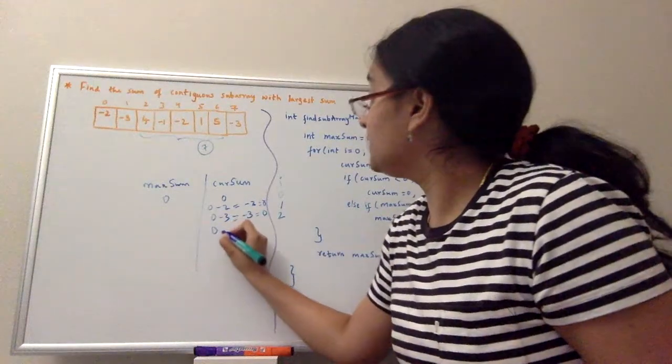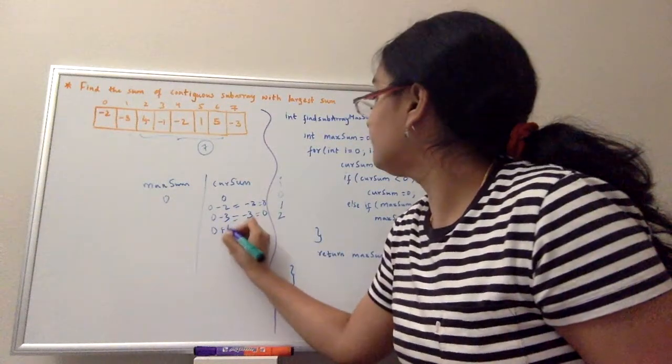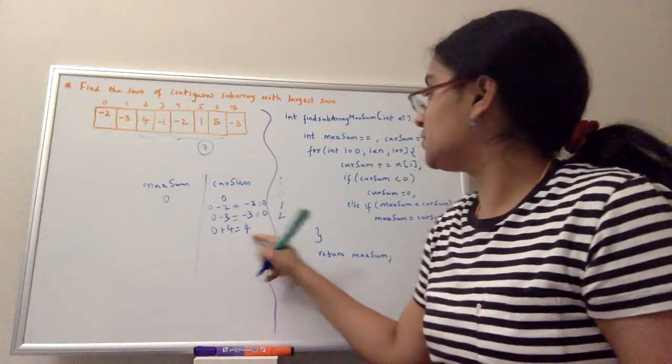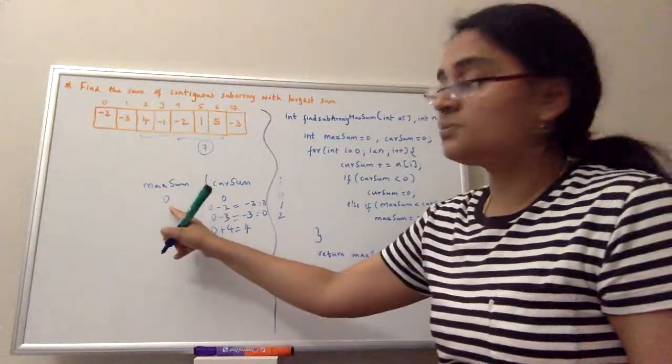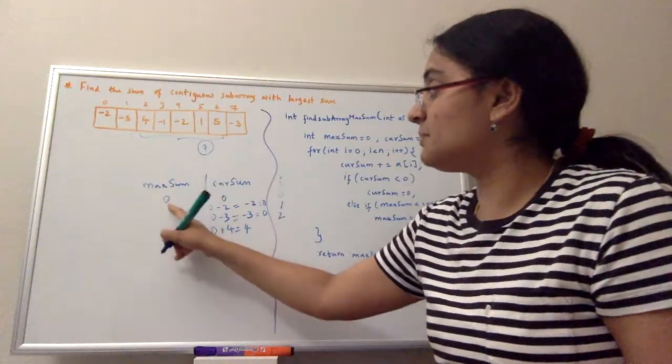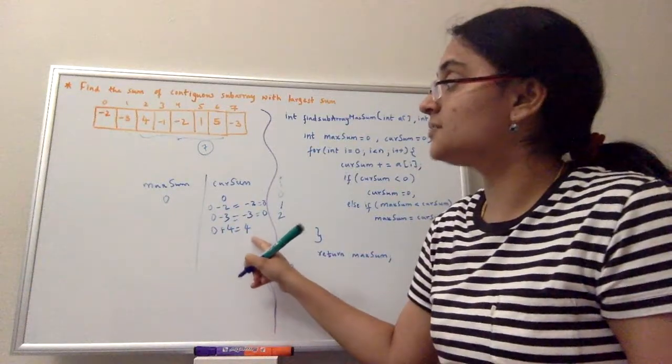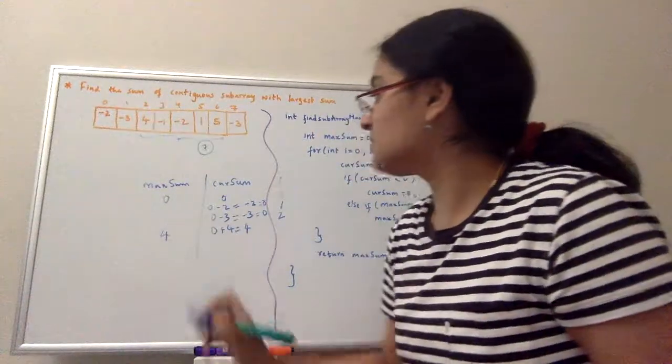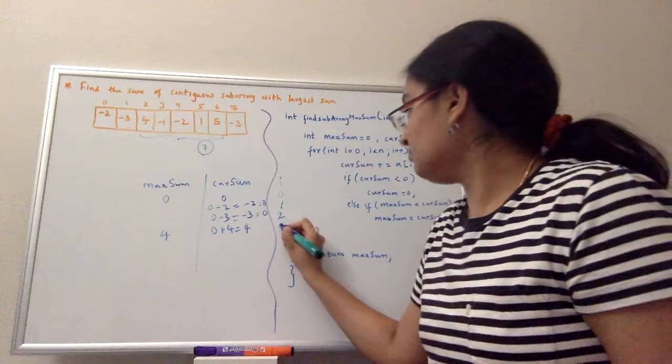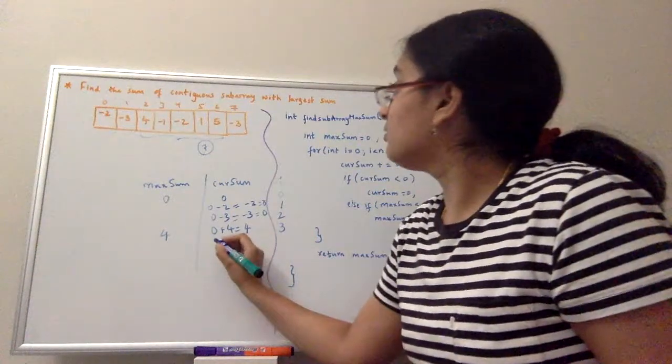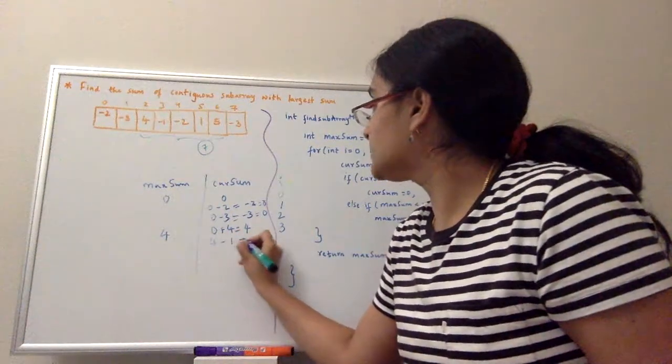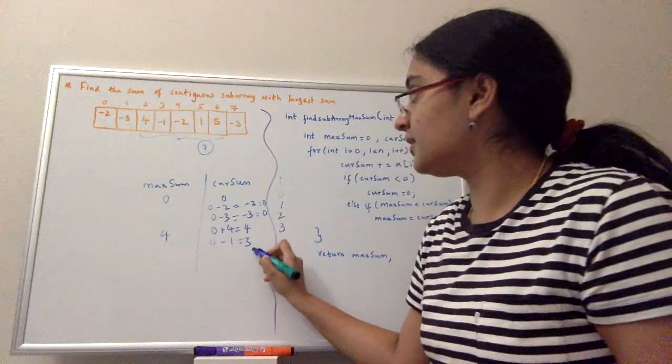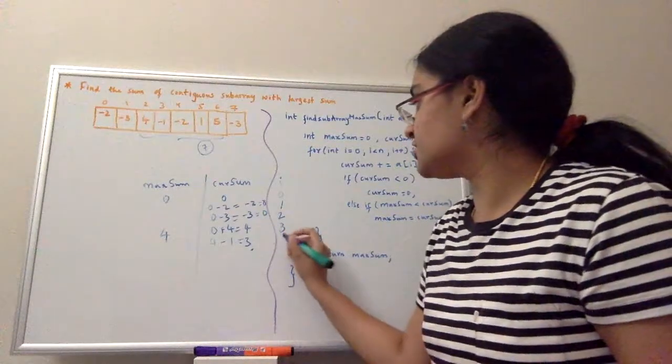When my i value is 2, I will add 4 which is 4. Because 4 is not less than 0, it will check if the maximum sum that we have is less than the current sum. Then we will assign my current sum to the maximum sum. So my maximum sum is 4 right now and my i is incremented. 4 minus 1 is 3. This is not less than 0. Is maximum sum less than current sum? No. So no changing values.